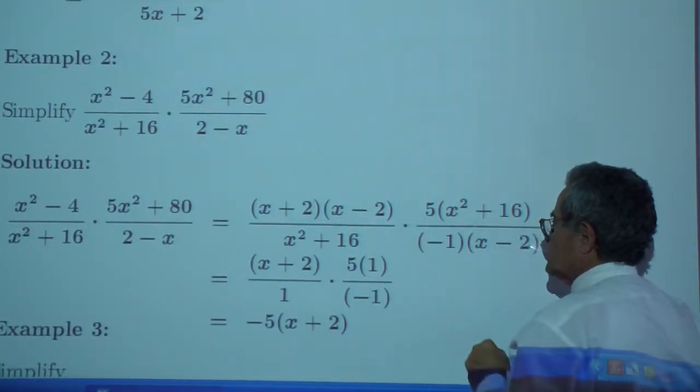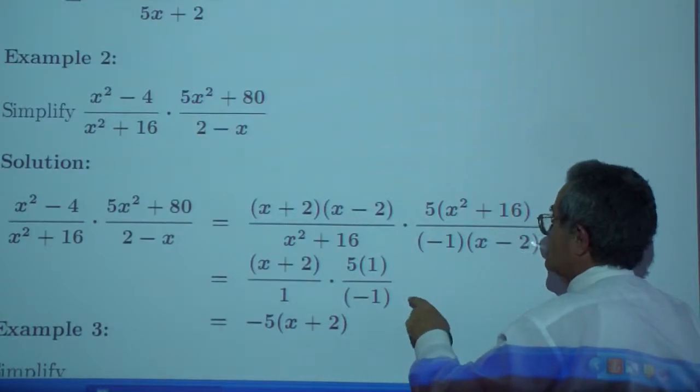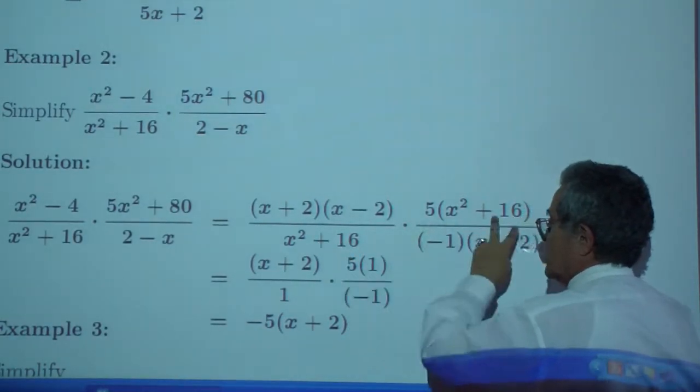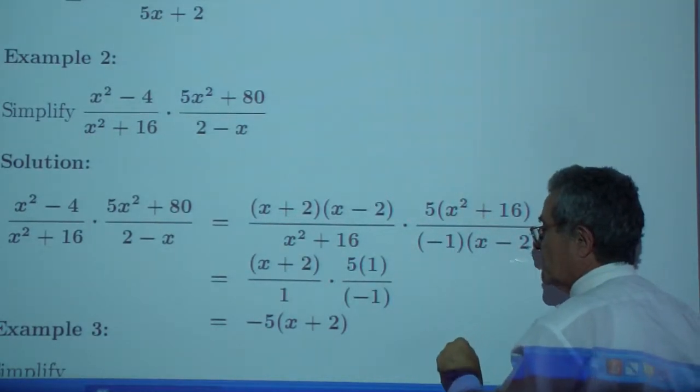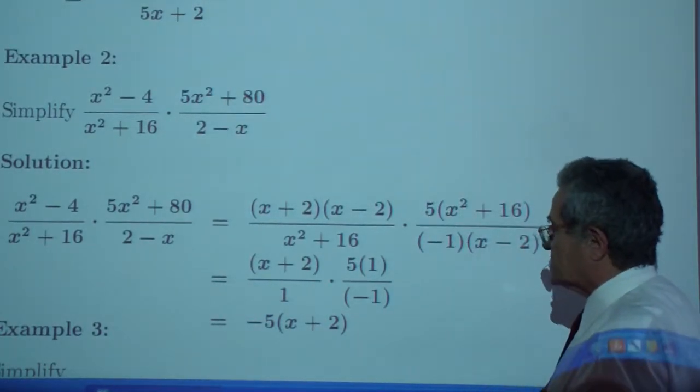x minus 2 over x minus 2 is 1. That leaves you with negative 1. And the x plus 2 does not drop out. The x squared plus 16 drops out. x squared plus 16 over the same x squared plus 16 is 1. And apparently you are left with negative 5 times the quantity x plus 2.